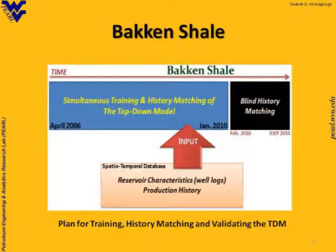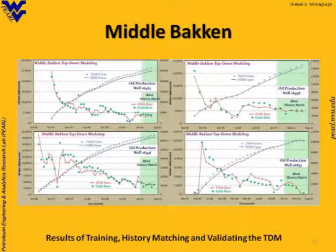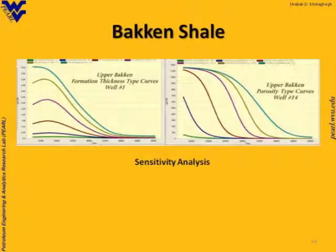From April 2006 to January 2010, we model history match. From February 2010 to July 2010, we use blind history match. This is the result for upper Bakken — you can see we got a very good match. And this is for middle Bakken — quite a reasonable match. The shaded area is the part that is completely blind.